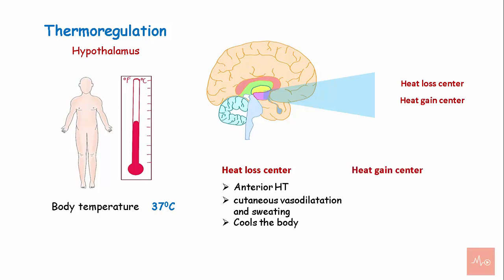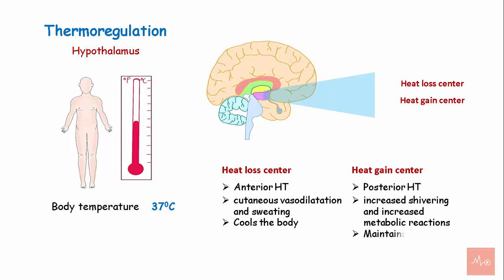The heat gain center is located in the posterior hypothalamus. In case of decreased body temperature, the heat gain center is activated and reduces heat loss by increasing shivering and increased metabolic reactions, thereby maintaining heat in the body.